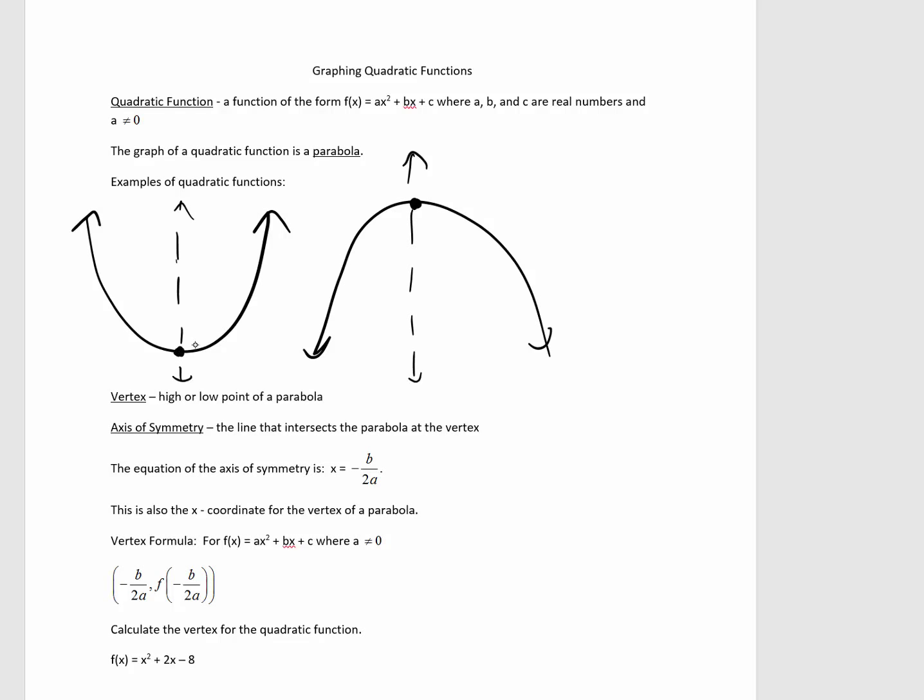So, the dots represent the vertices, and the dotted line is the equation for the axis of symmetry. Notice, it is a vertical line, so that equation is x equal to a number.